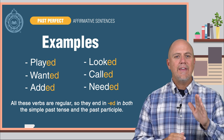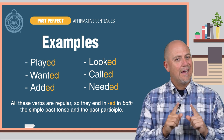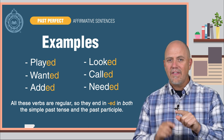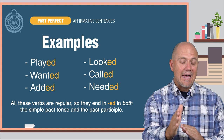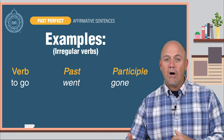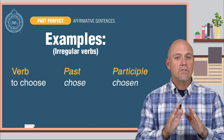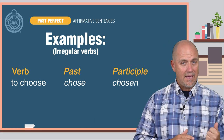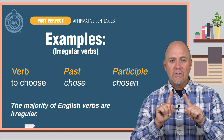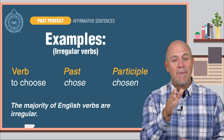All these verbs are regular, so they end in -ed in both the simple past tense and the past participle. However, it is irregular verbs that are difficult to conjugate — very often they are completely different from the simple past form. For example, the verb to go is went in the past and gone in the participle form: I went, I have gone. The verb to choose is chose in the past tense and chosen in the participle form. You get the idea. The majority of English verbs are irregular. Sorry — you need to refresh your memory from level three.